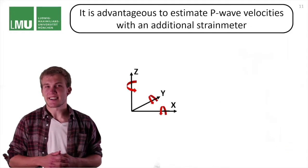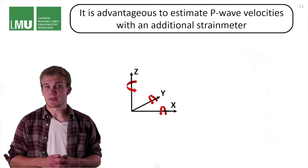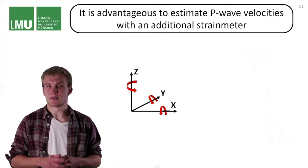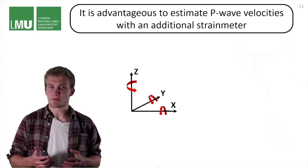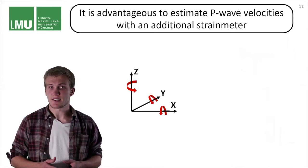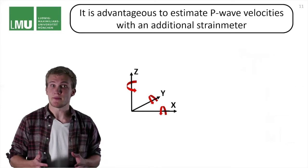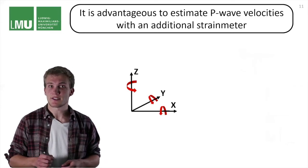Frankly, it seems like estimating P wave velocities with rotations is just a theoretical concept and could not be applied to the real world. It would be more natural to exploit the volume-changing properties of P waves, and those are captured by a strain meter that directly measures changes in length scale.